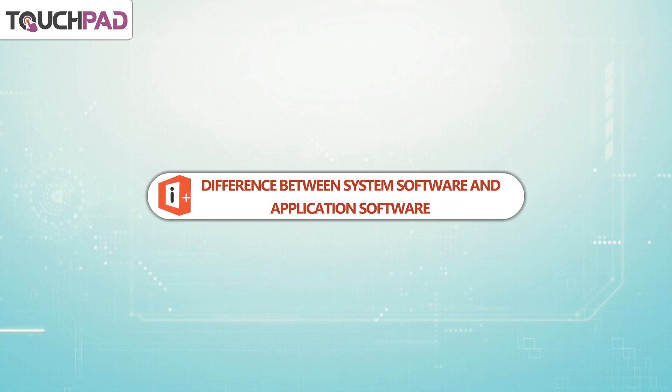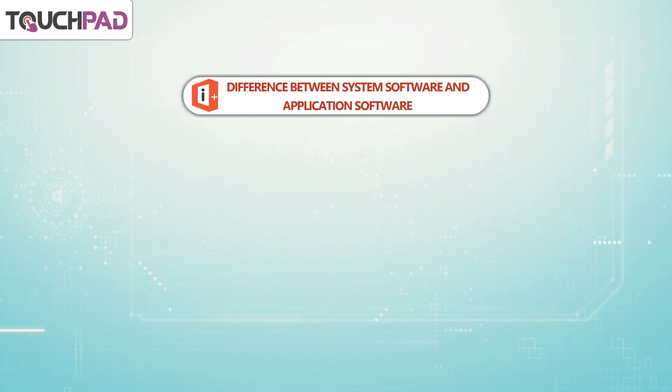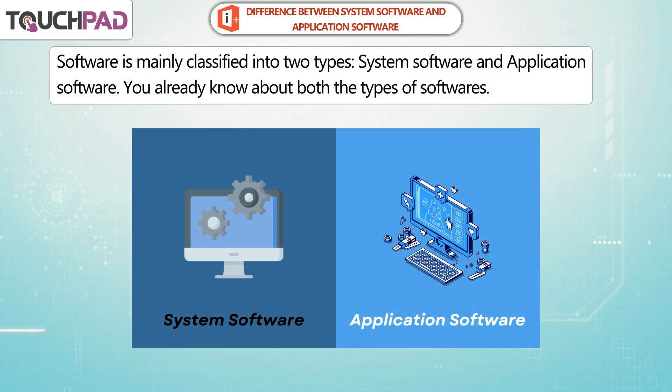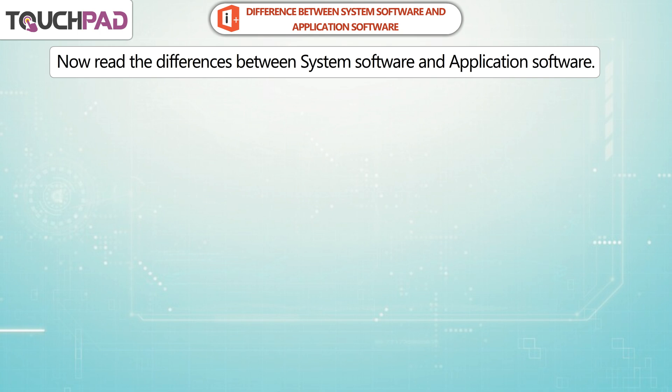Difference between System Software and Application Software. Software is mainly classified into two types: System Software and Application Software. You already know about both the types of software. Now, read the differences between System Software and Application Software.